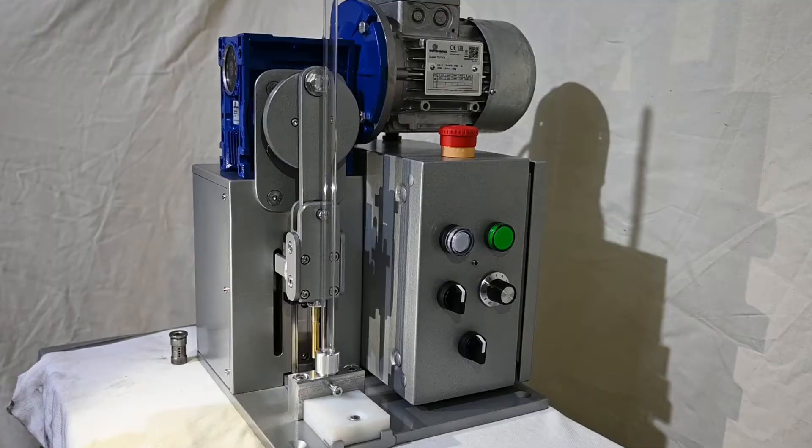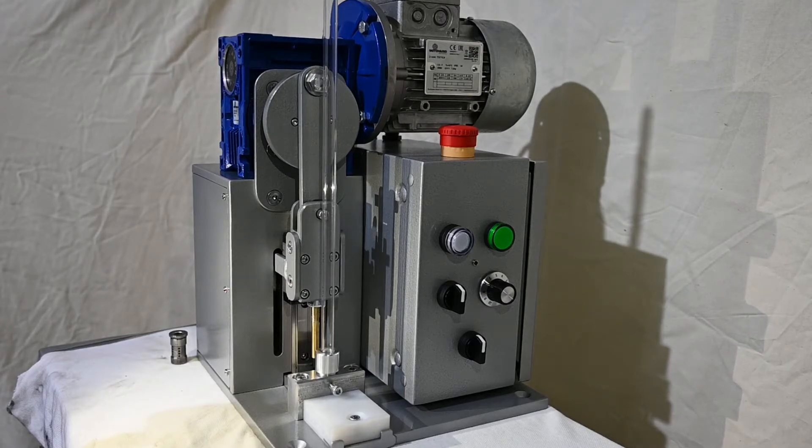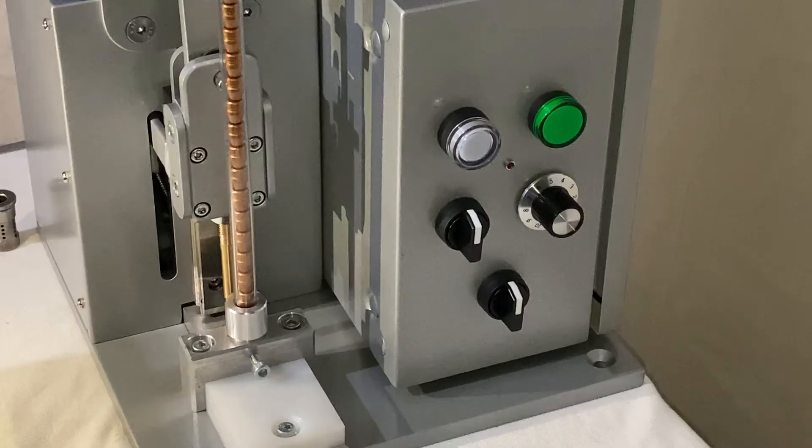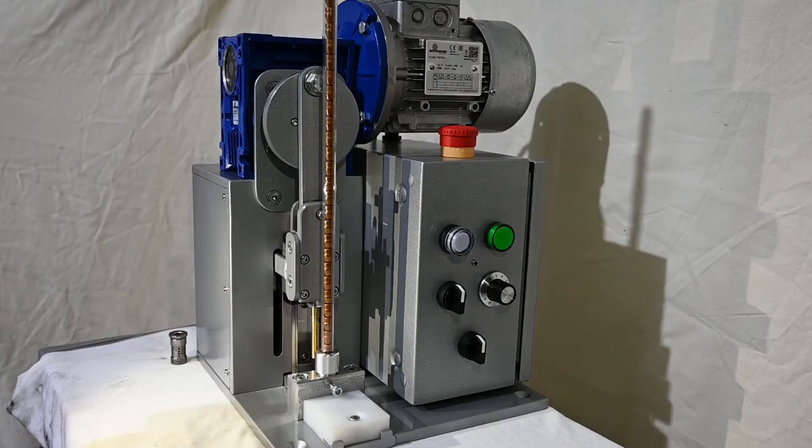Die change is that simple, it only takes a few seconds. Now we'll load some projectiles in the drop tube. These are 122 grain, flat point, 9mm projectiles.